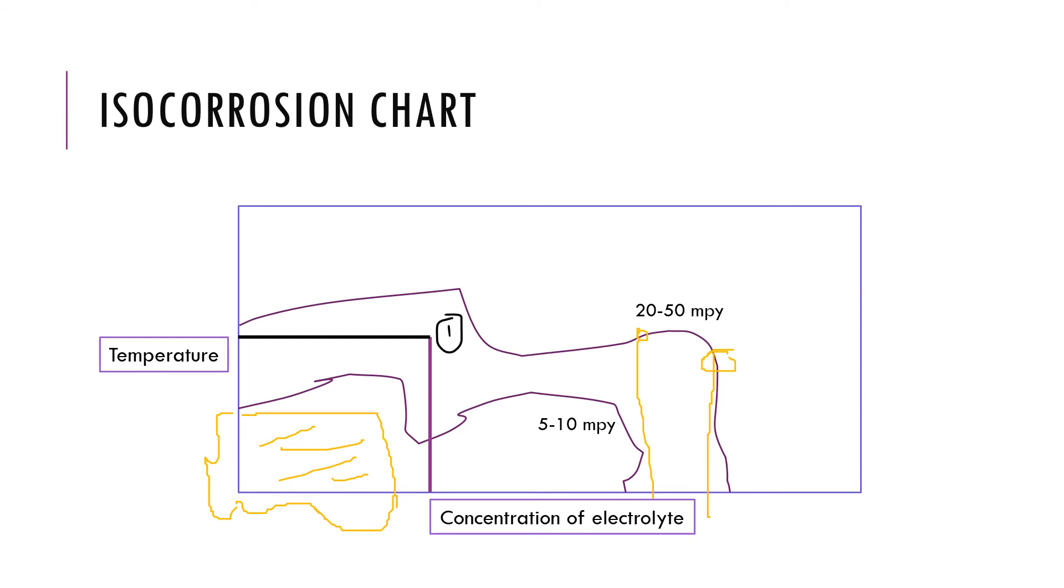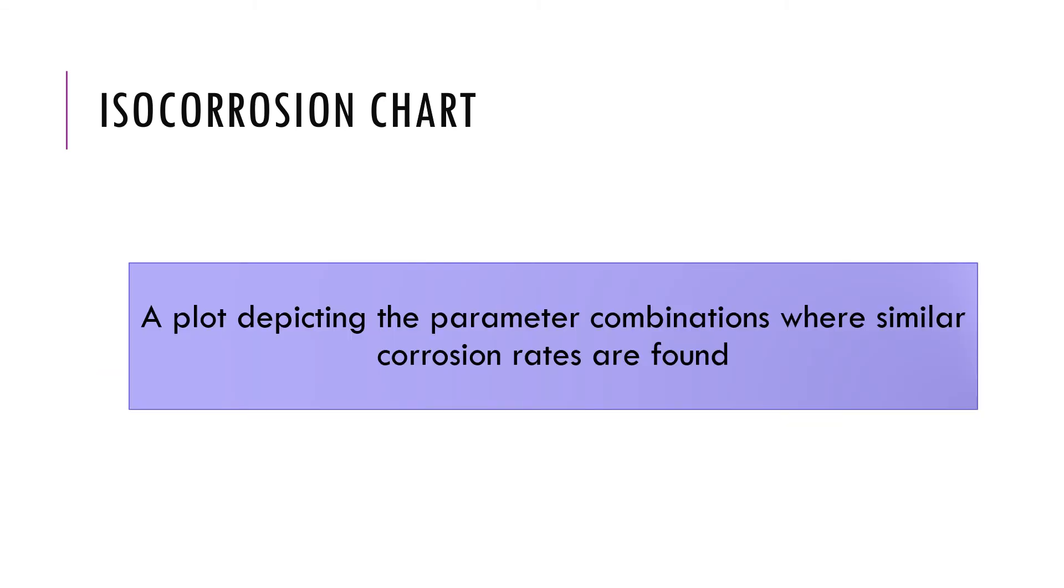In short, isocorrosion chart is a plot depicting the parameter combinations of temperature and concentration where similar corrosion rates are found.